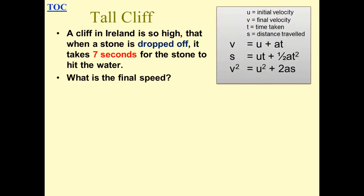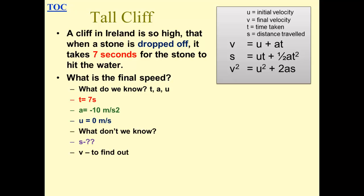Next question is, what is the final speed? What do we know? Time, acceleration and initial velocity again. What don't we know? S and V. We need to find V, but we don't know S with just this equation. So S is the thing we don't know, so we need to eliminate that.